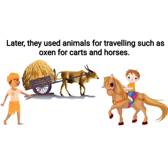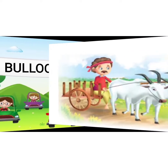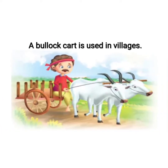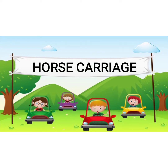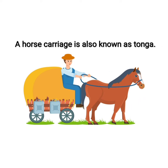Later, they used animals for travelling, such as oxen for carts and horses. Then they would ride to another place. A bullock cart is used in villages. A horse carriage is also known as Tonga.